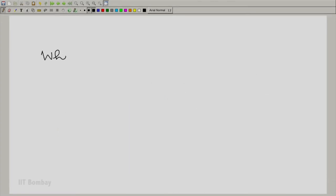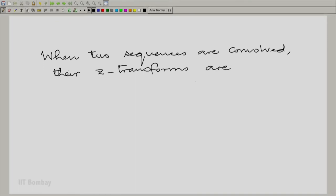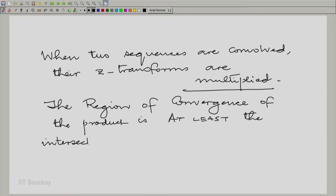So, we can now state property 4 for the Z transform. When two sequences are convolved, their Z transforms are multiplied. What about the region of convergence? The region of convergence of the product of the two Z transforms is at least the intersection, if not more.